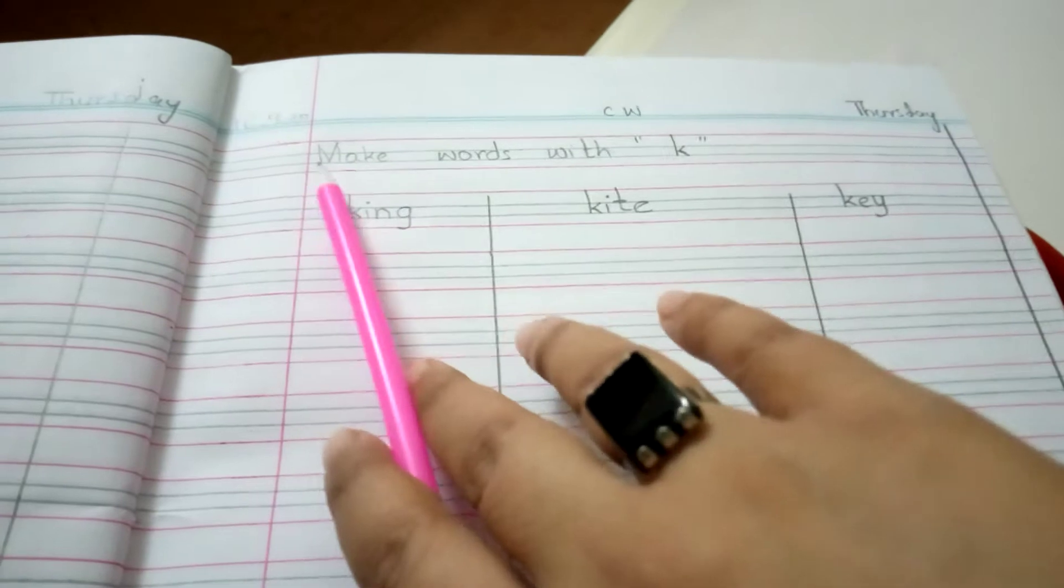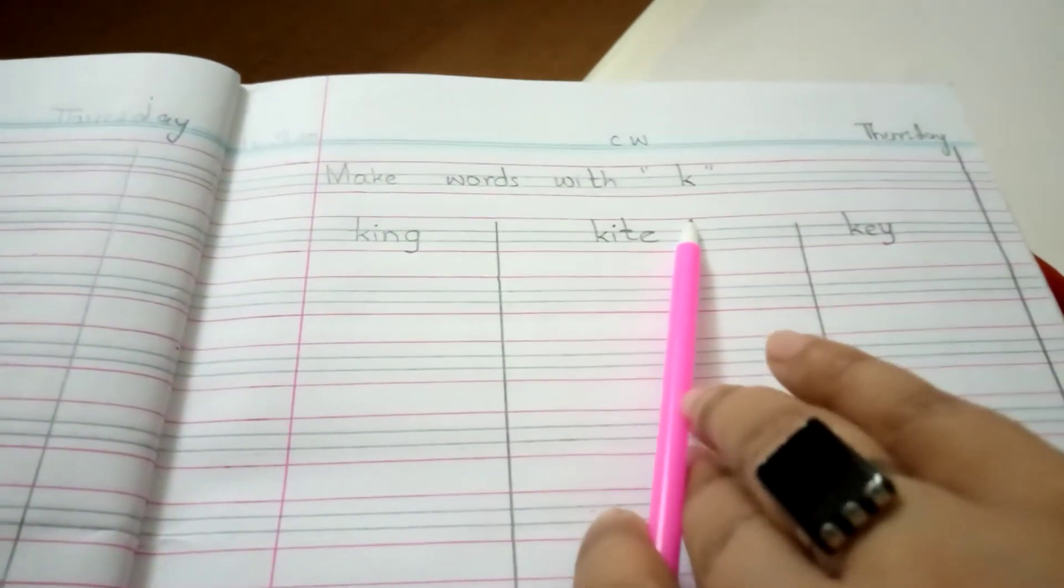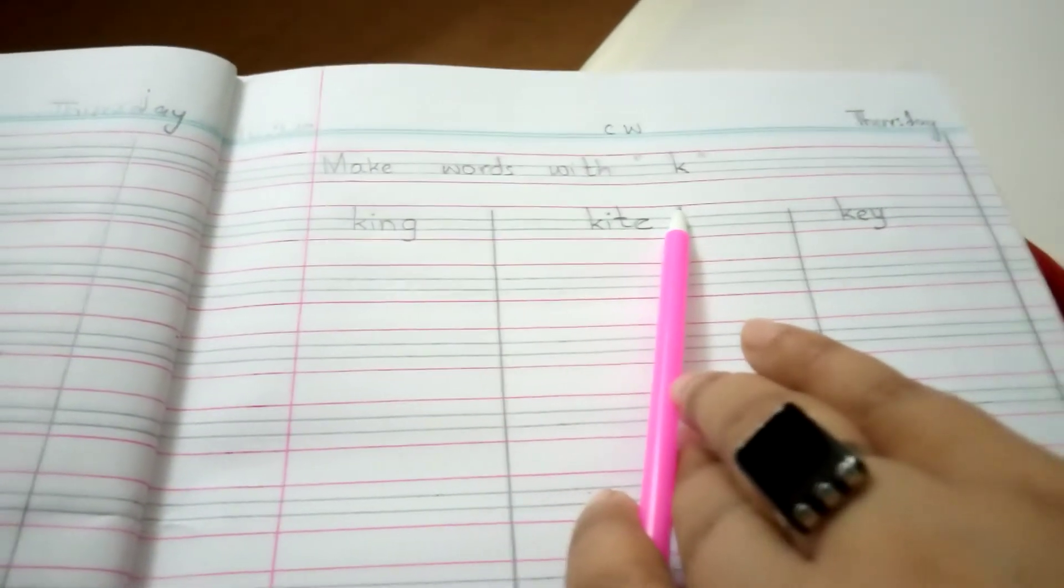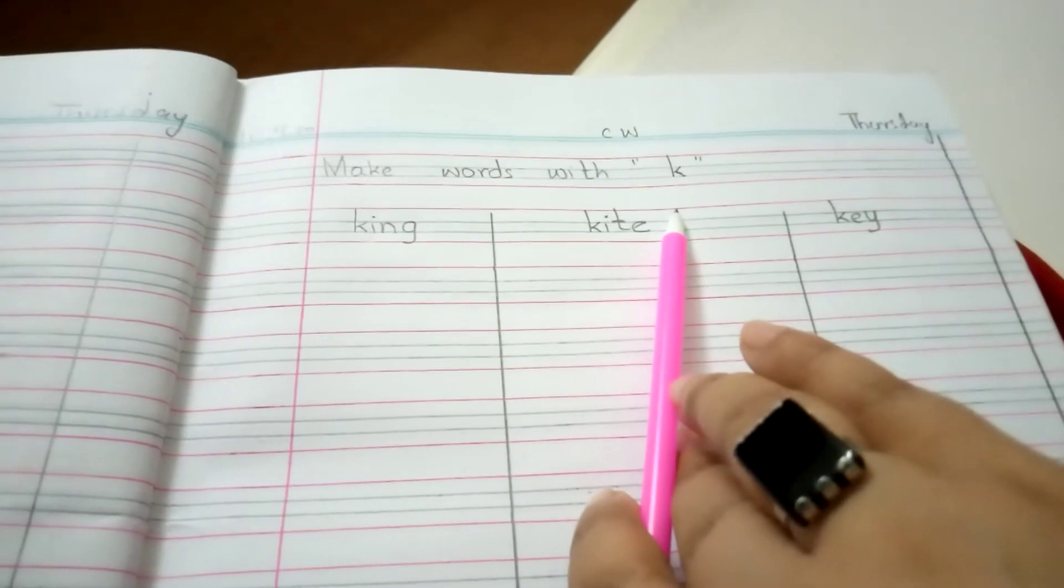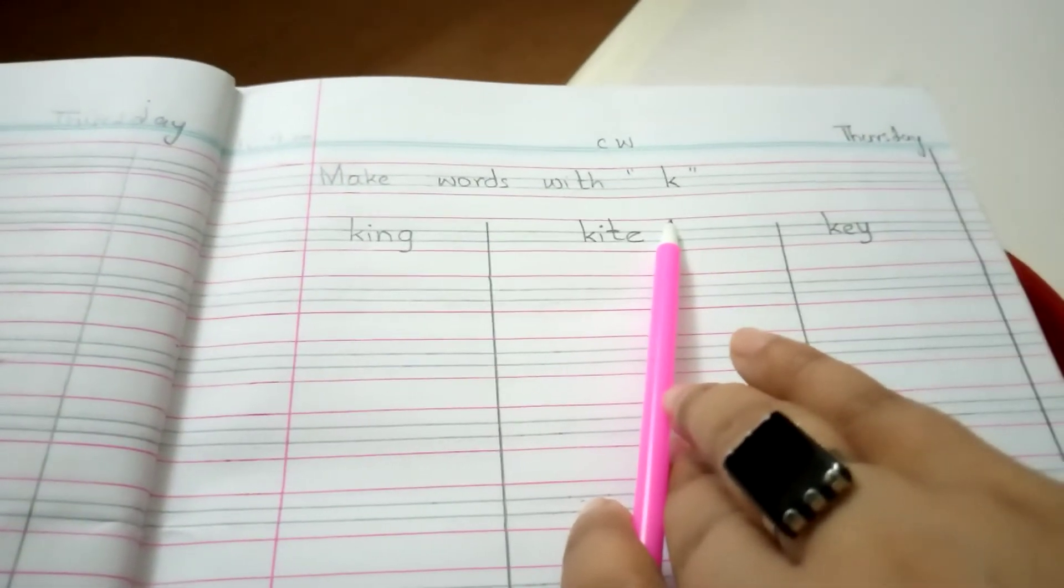C-W. Make words with letter K. What is the sound of K? K. K.